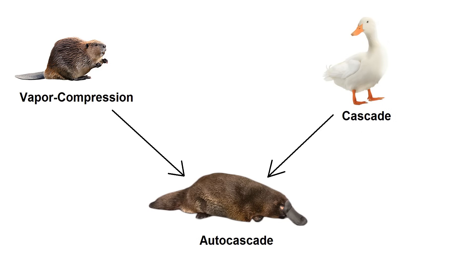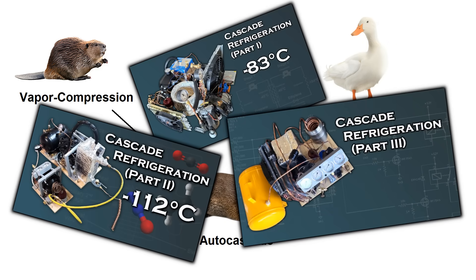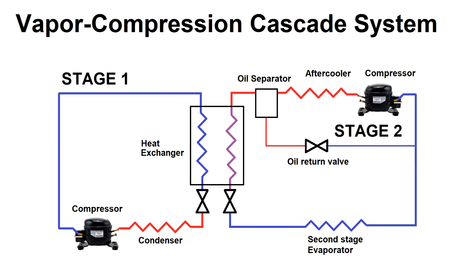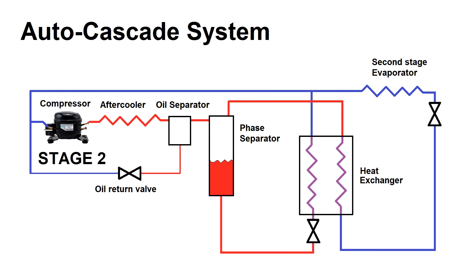In earlier videos, I explained the inner workings of a typical vapor compression cascade cycle, which uses two refrigeration loops with two different compressors for two different refrigerants so that you basically have one refrigerator cooling a second refrigerator so that it can get even colder. The autocascade system also uses multiple refrigerant loops, but just one compressor.